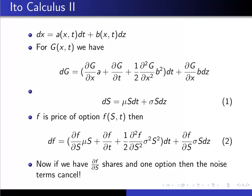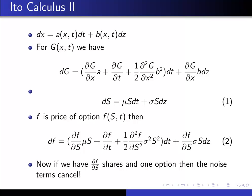So imagine that we have a share and we're short a call option. Well, in fact that should be, imagine that if we have df/dS shares as opposed to we have a share, in order for the noise terms to cancel. So our portfolio is minus f, so we're short one derivative, plus we've got df/dS shares. Then delta π is minus delta f and plus df/dS times delta S, since df/dS is just the number of shares that we have.